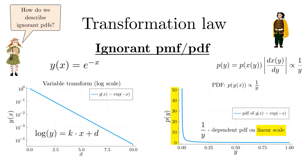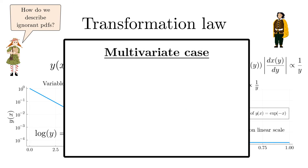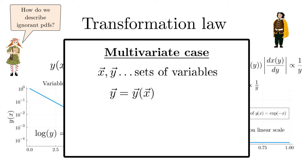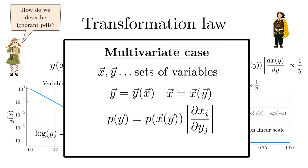We also want to consider the transformation law for the multivariate case. Let x be a set of variables with n elements and y a new set of variables with invertible transformations — y is a unique function of x and x in turn is a unique function of y. Then the PDFs are related by the following expression, where the last factor is the Jacobi determinant.